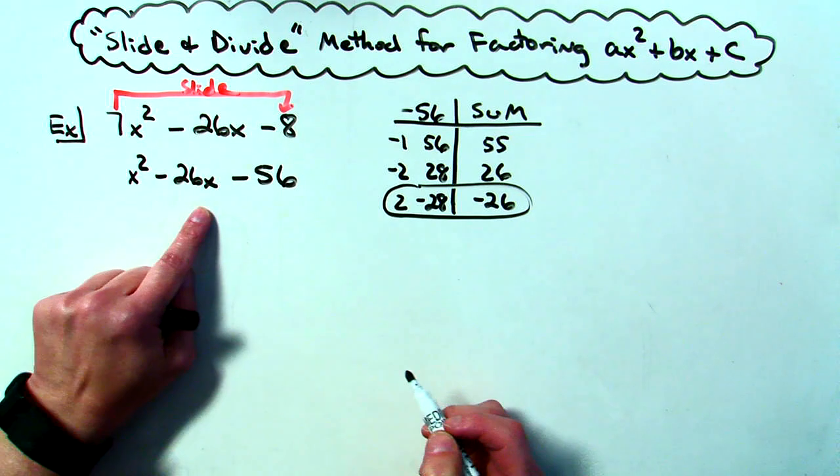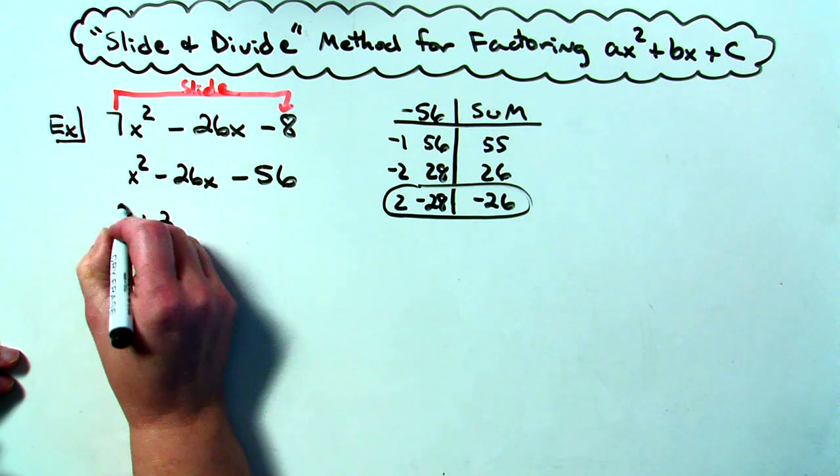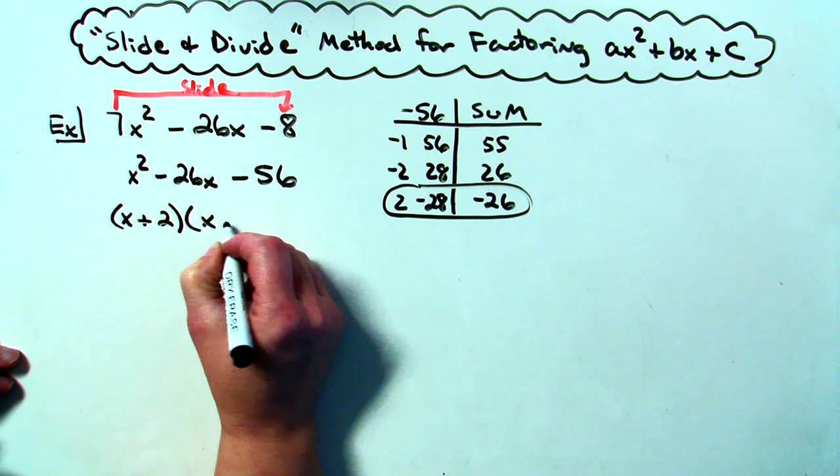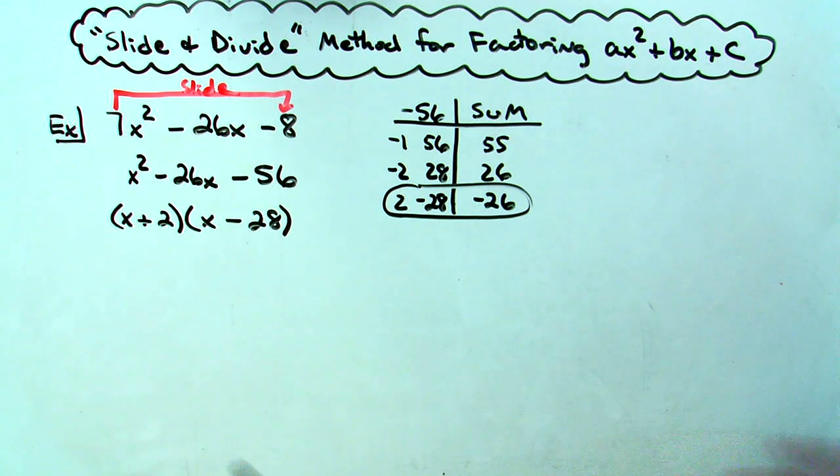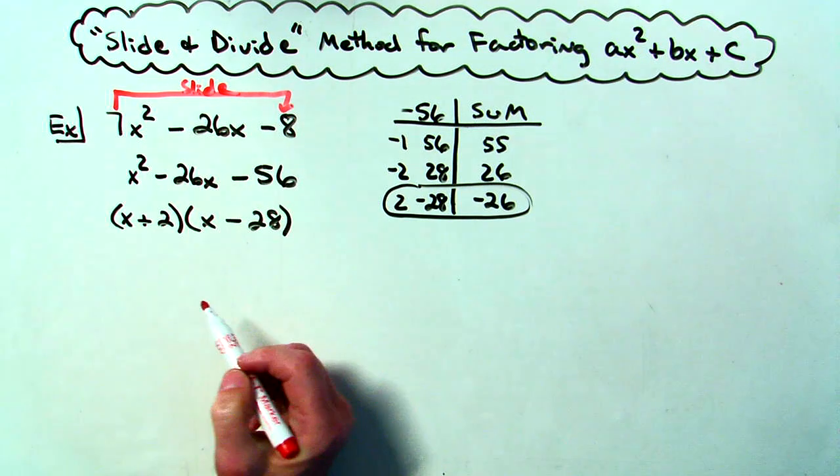So factoring this now I have an x plus 2 and an x minus 28. Now we have done the slide part of slide and divide. Now I have to do the divide part.